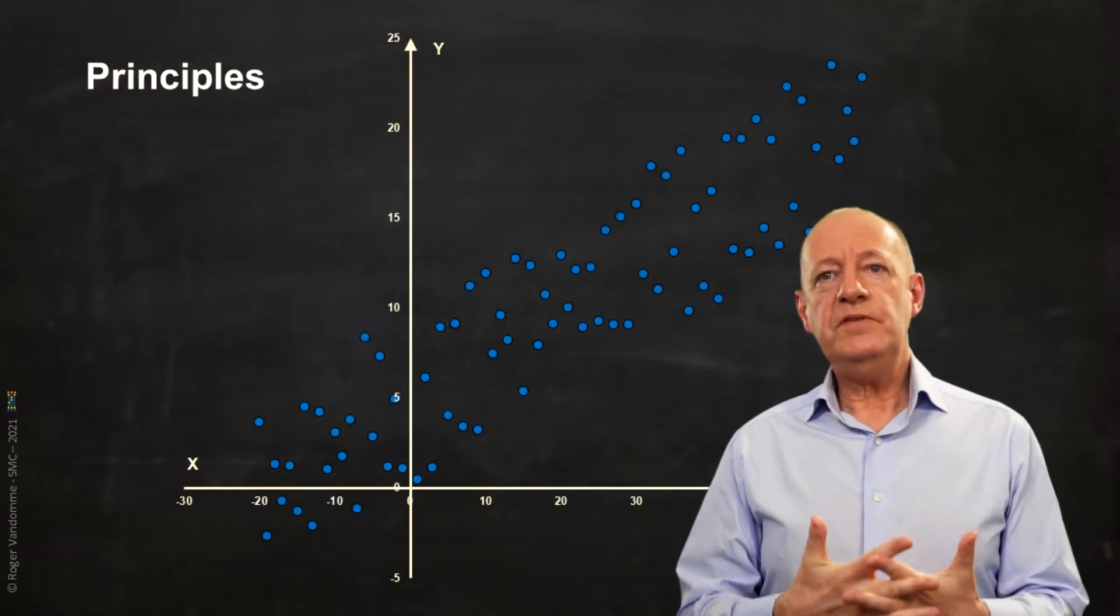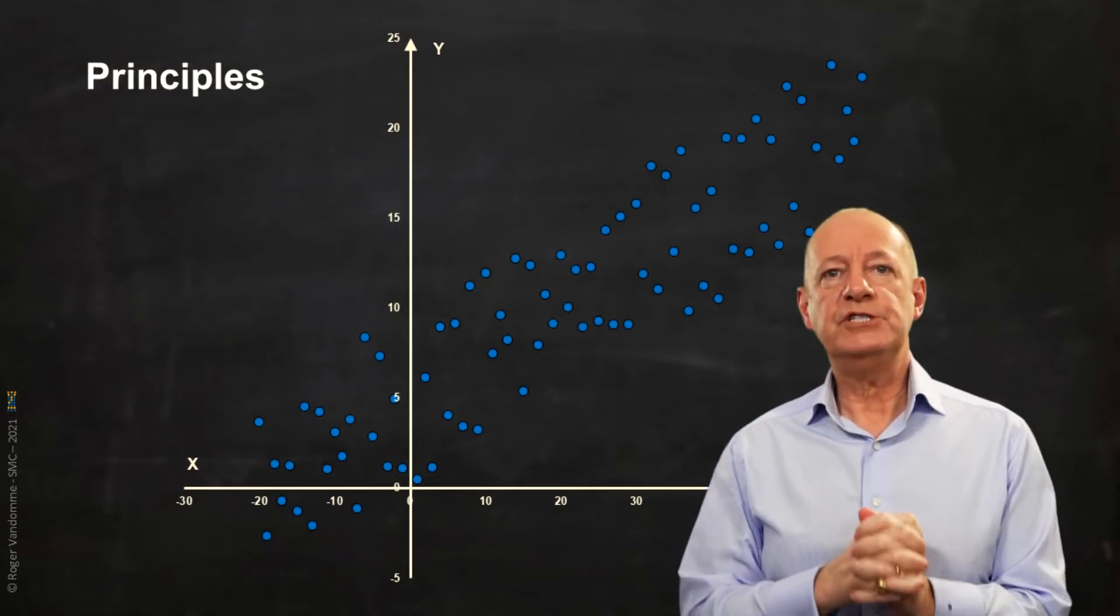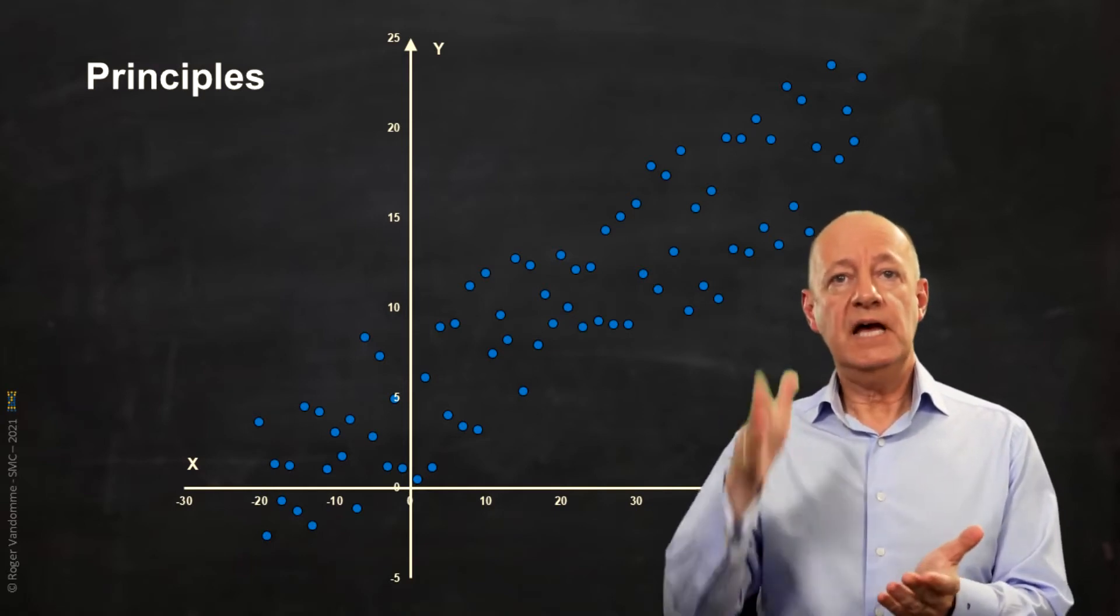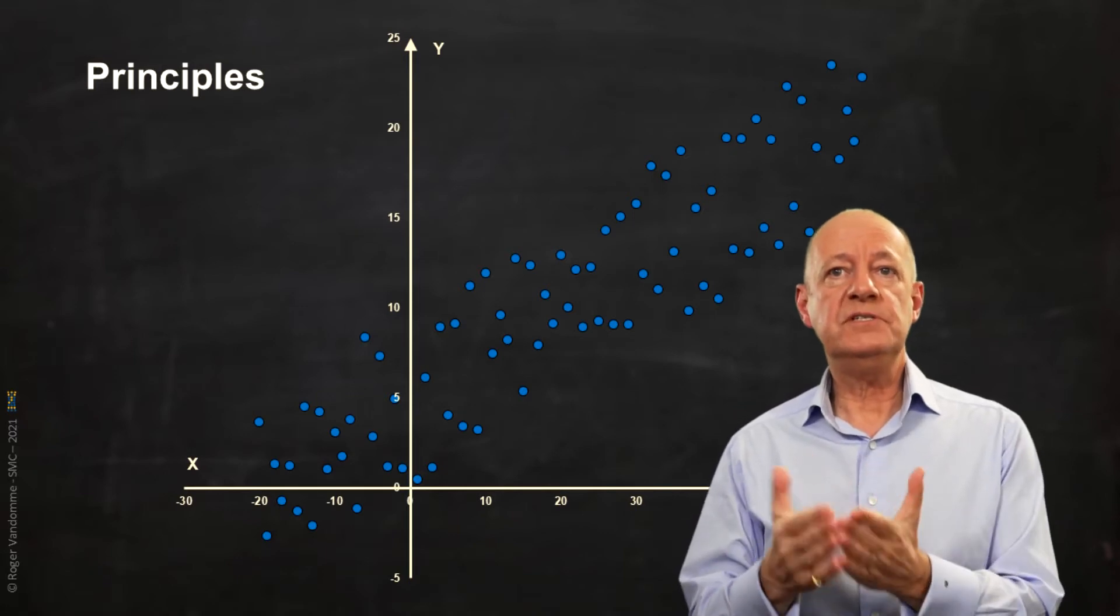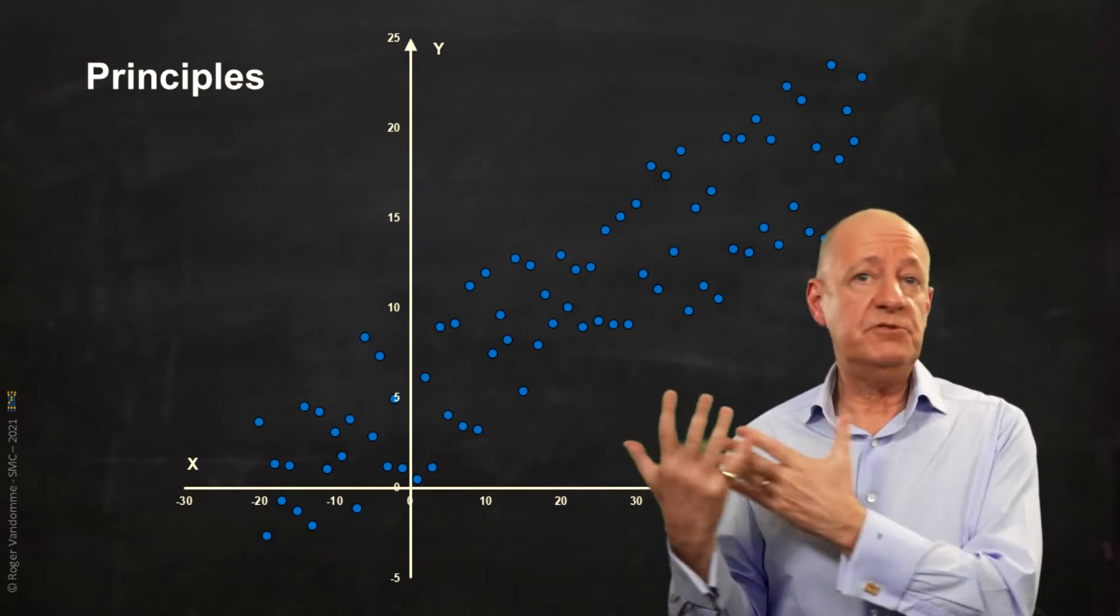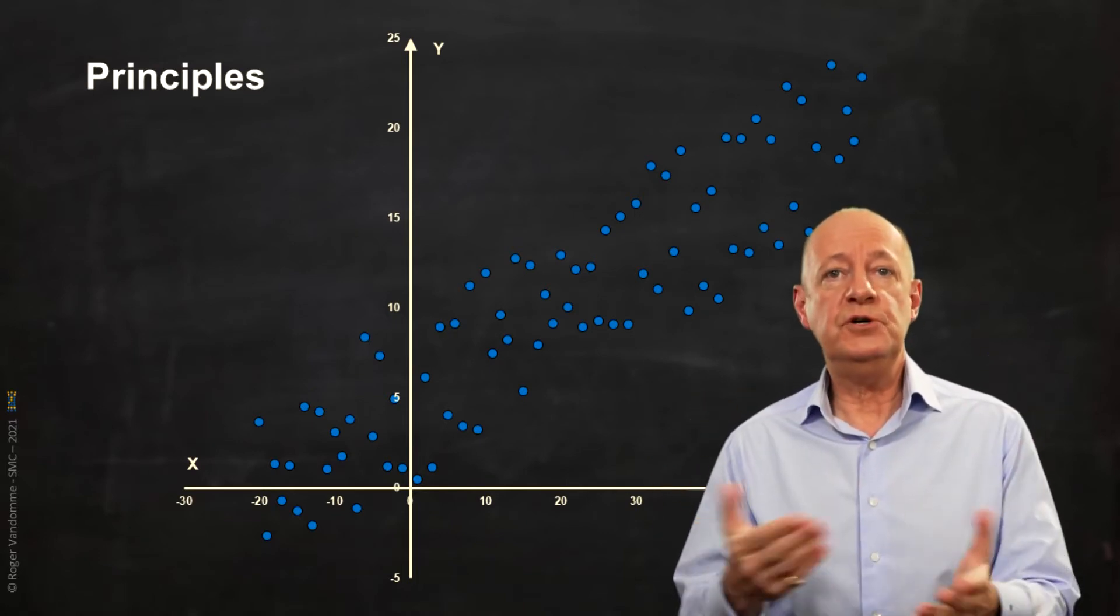Let's start with the simplest model, the linear regression. We have two variables, x and y, whose relationship is represented on the scatter plot by a cloud of dots. We see there is a positive correlation. When x increases, so does y.